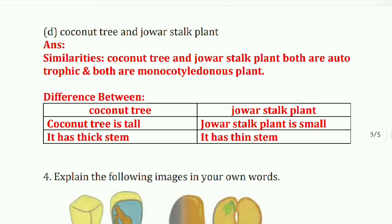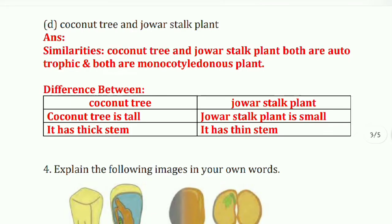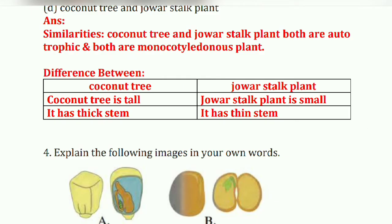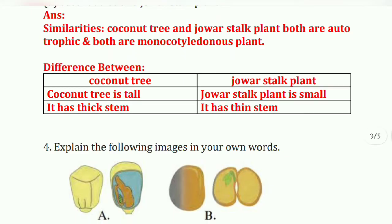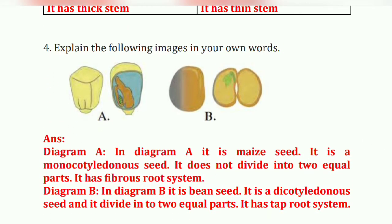Next: coconut tree and jowar stock plant. Similarities: both are autotrophic and both are monocotyledonous plants. Differences: coconut tree is tall whereas jowar stock plant is small. Coconut tree has a thick stem and jowar stock plant has a thin stem.